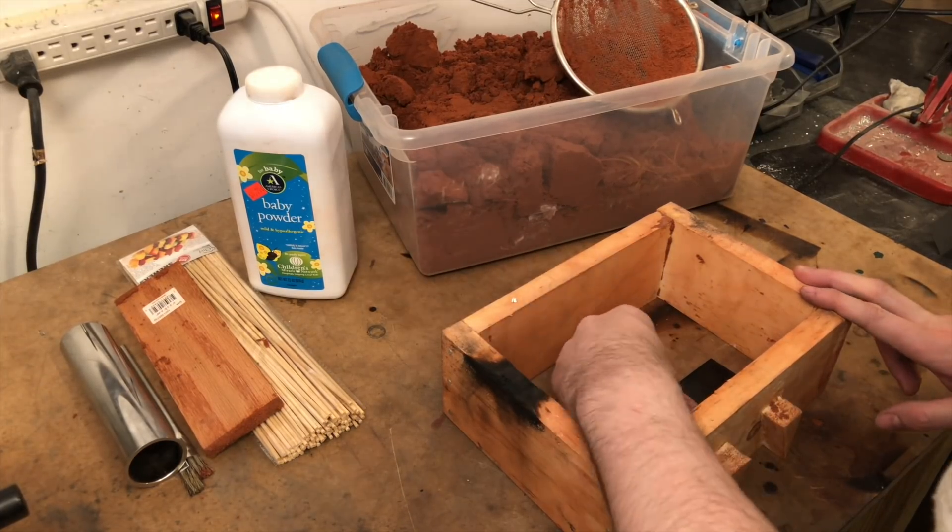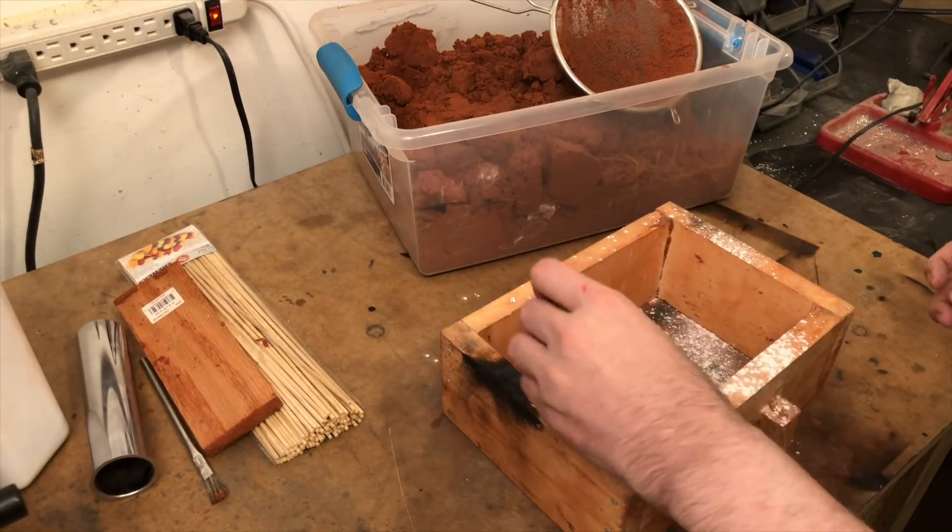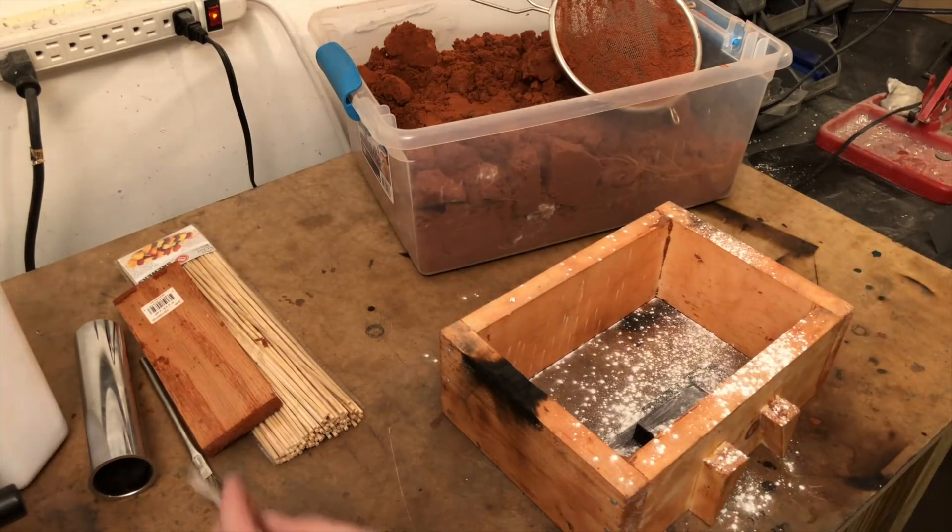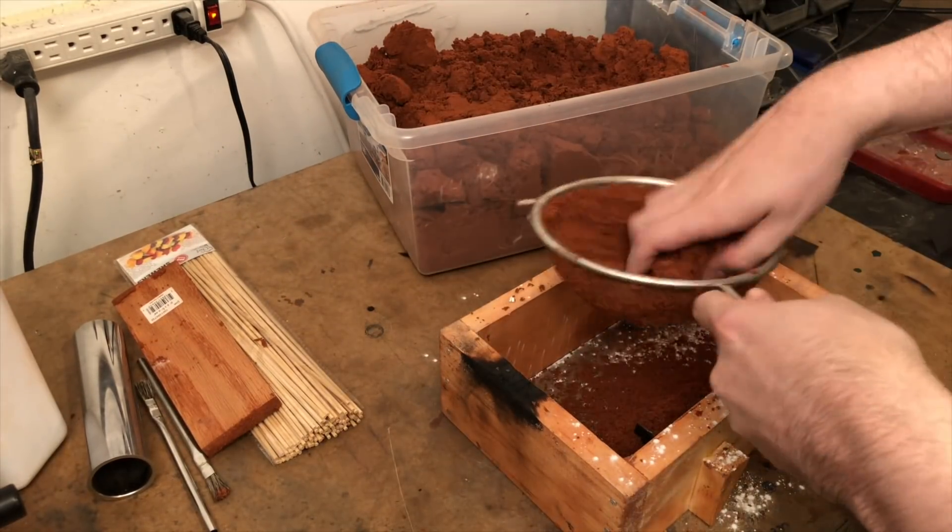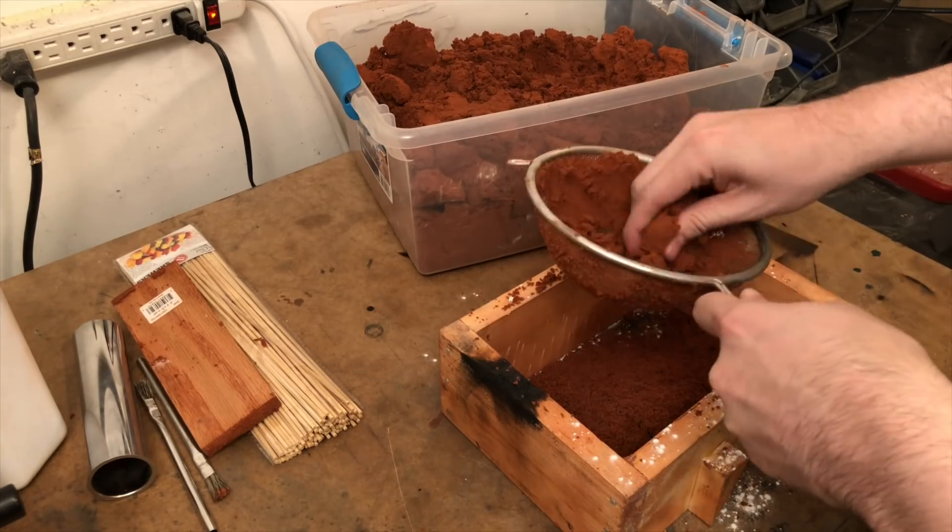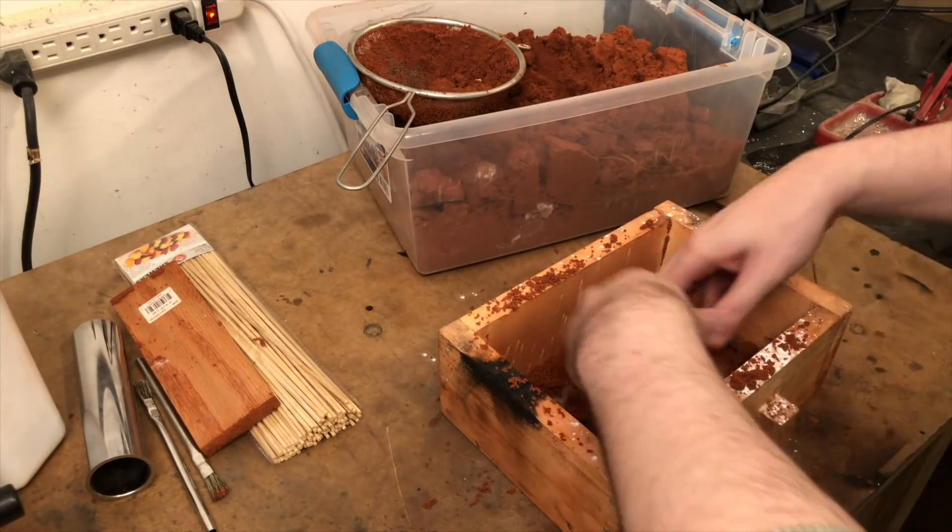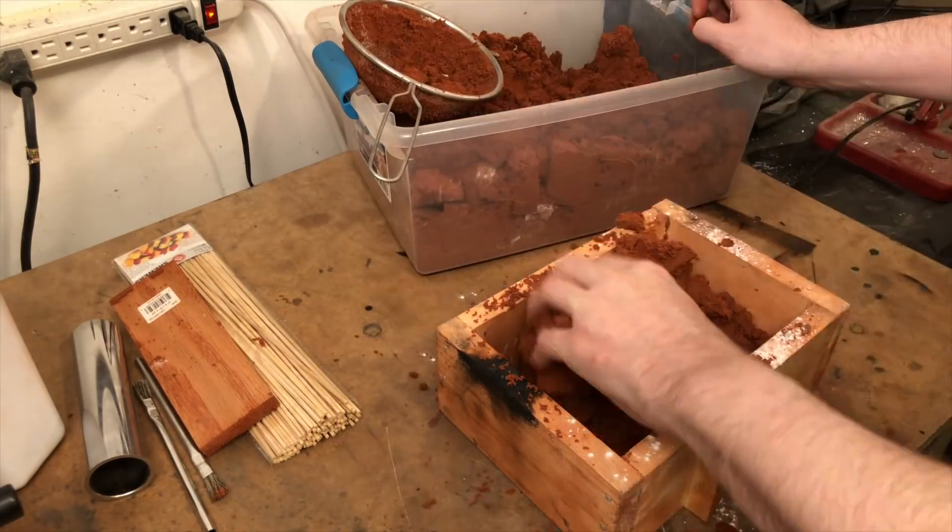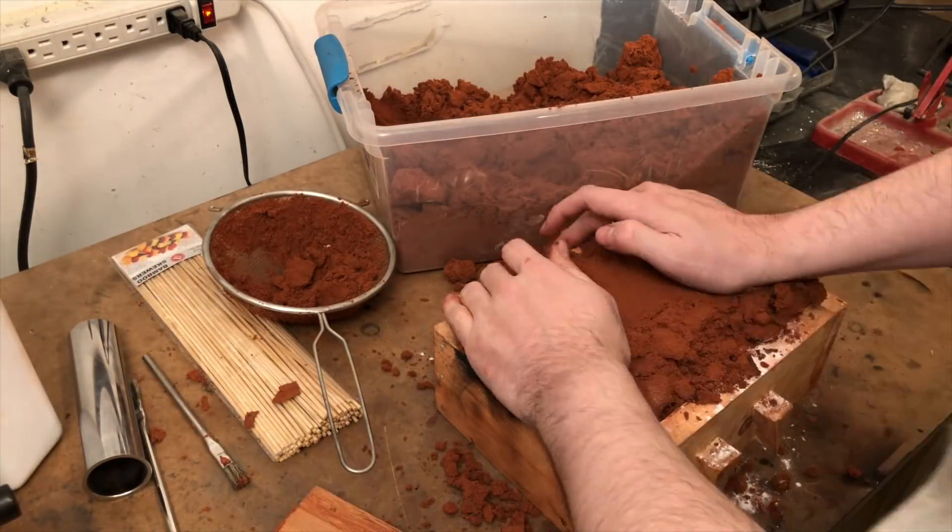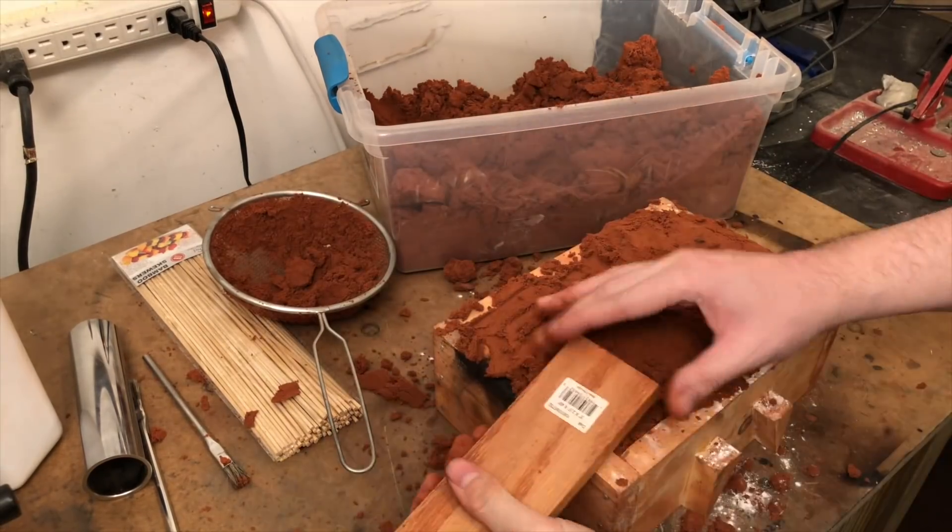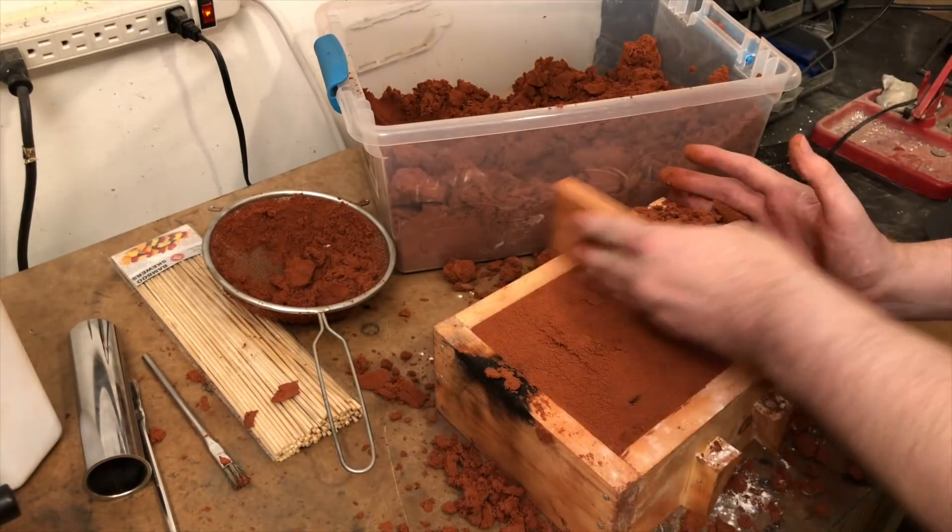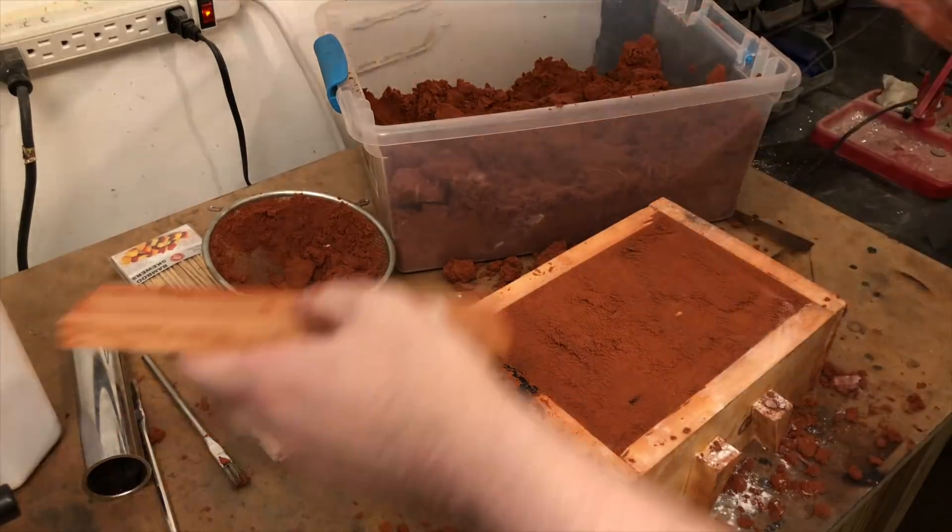The mold process is exactly like that of the nose cone. I drop the pattern into the flask, give it a light dusting with baby powder, and start filling it up with petrobond. Once filled, I strike off the top and flip her over, where I repeat the process.